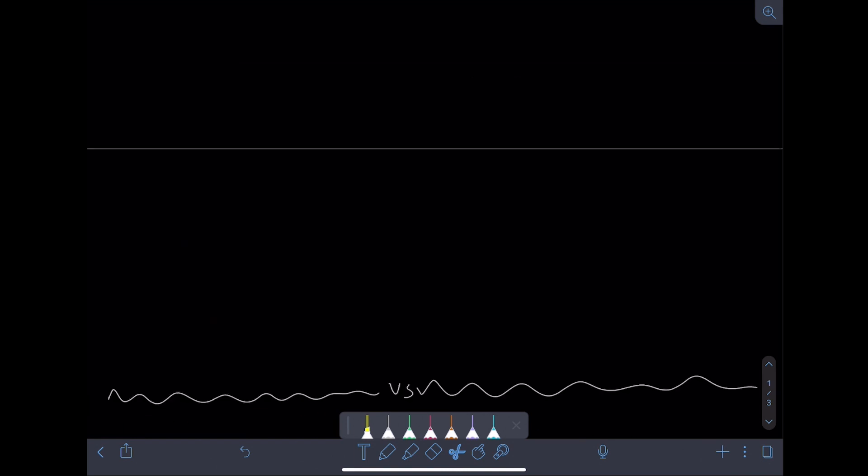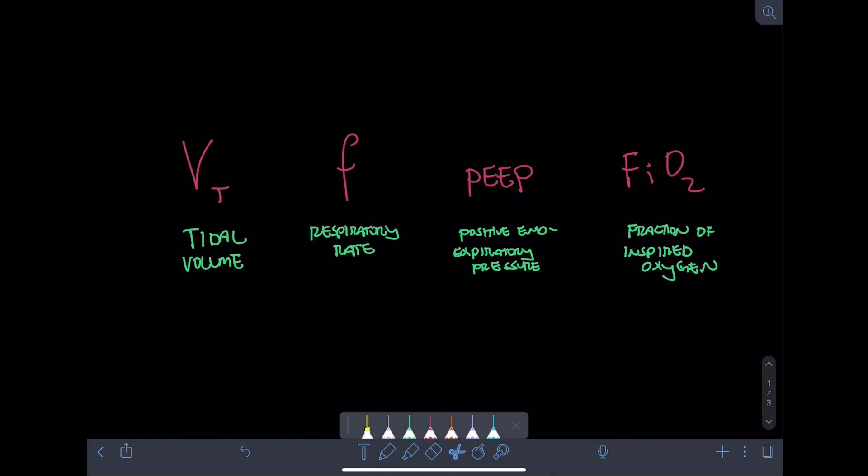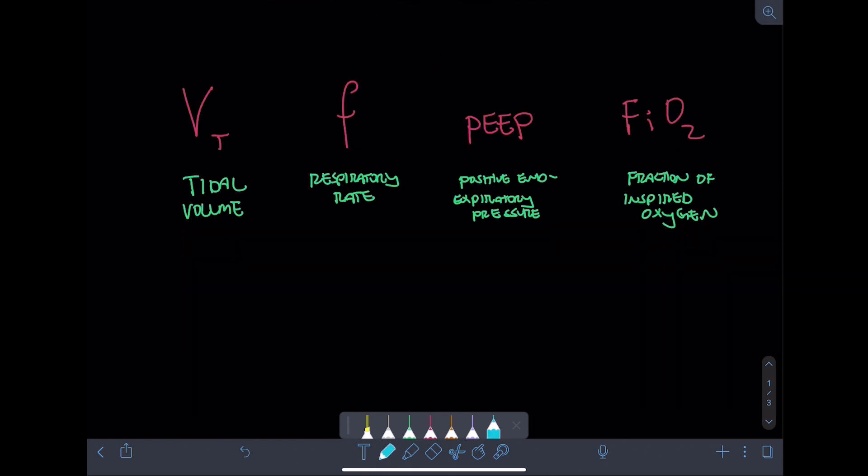Now let's revisit our four basic vent settings, tidal volume, respiratory rate, PEEP, and FiO2. Now that we've discussed the differences between oxygenation and ventilation, know that tidal volume and respiratory rate both affect ventilation or CO2 removal, while PEEP and FiO2 both affect oxygenation or O2 intake. Now although later more advanced topics can reveal that this may not always be true, just know that when beginning to learn vent settings, this holds true most of the time.